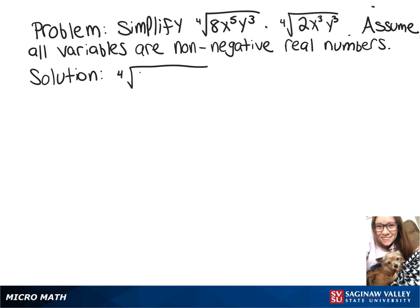So we'll start by just multiplying everything together underneath that radical, giving us the 4th root of 16x to the 8th, y to the 6th.